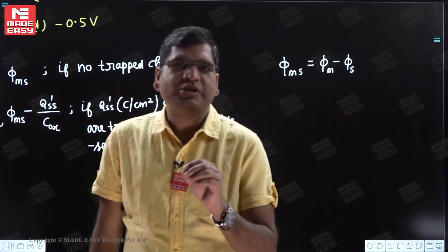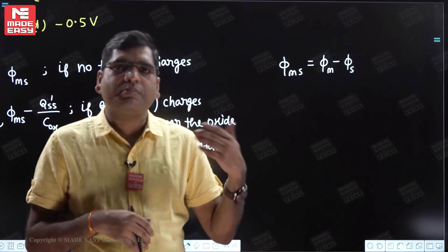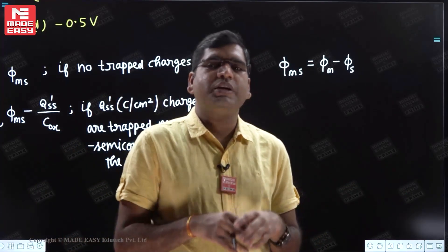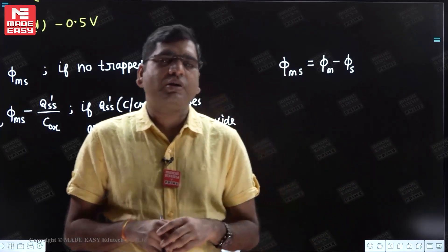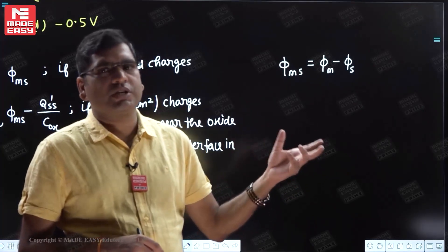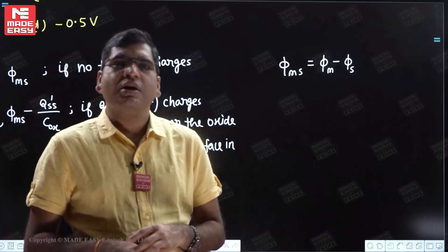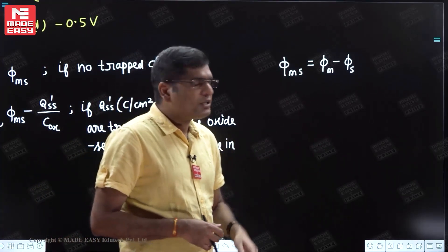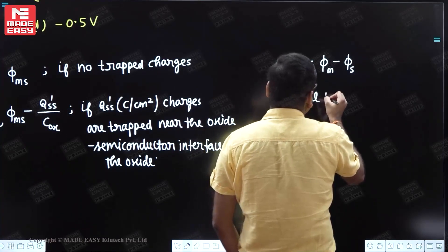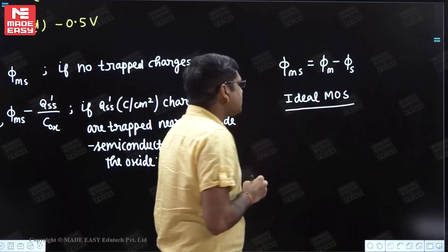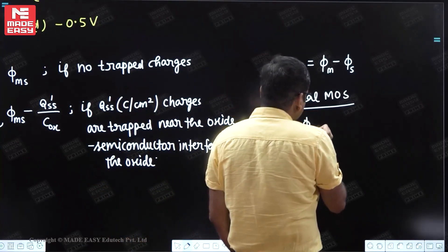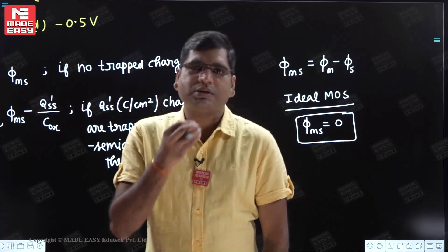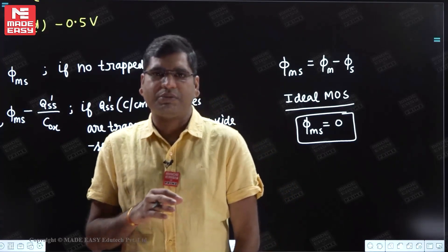For an ideal MOS capacitor, phi_ms should be equal to zero — basically the Fermi levels of the metal and semiconductor should be at the same level. But practically we do not get such materials where the Fermi levels of the semiconductor and metal are the same. So in practical materials there will be a difference in work functions, meaning phi_ms is non-zero. If someone specifies an ideal MOS capacitor, then phi_ms = 0. In our case it is not ideal — values of metal and semiconductor work functions are given.